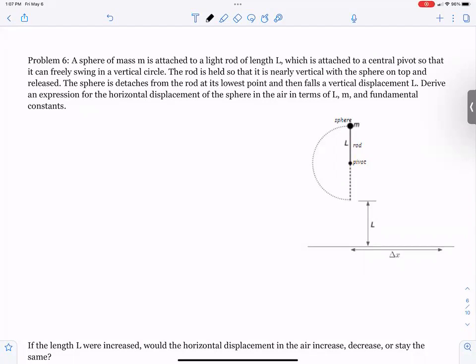Read along with me, please. A sphere of mass M is attached to a light rod of length L, which is attached to a central pivot point so that it can freely swing in a vertical circle. The rod is held so that it is nearly vertical with the sphere on top and released. The sphere is detached from the rod at its lowest point and then falls a vertical distance L. Derive an expression for the horizontal displacement of the sphere in terms of L, M, and fundamental constants.